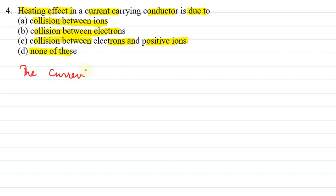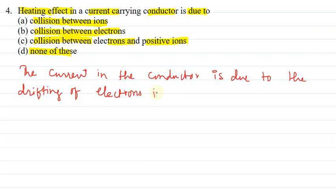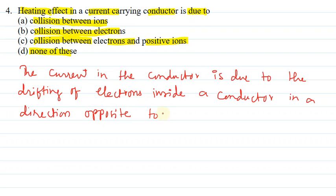The current in the conductor is due to the drifting of electrons inside a conductor in a direction opposite to the flow of electrons.